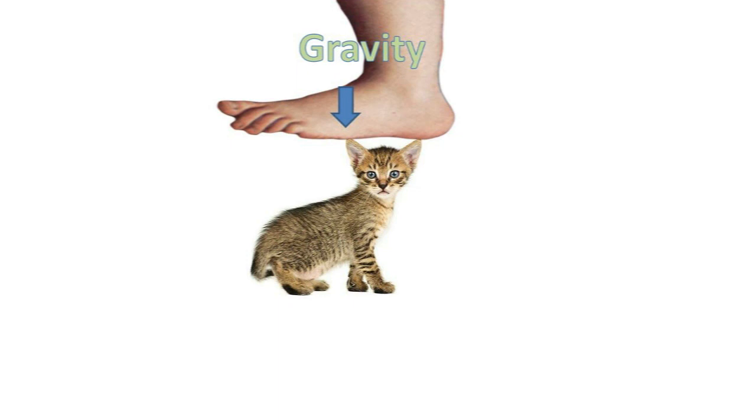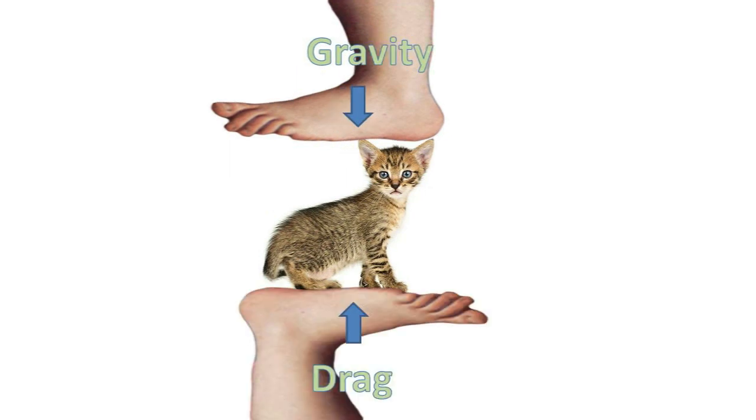So that would happen unless something called drag happens. So drag is a force that slows you down. Drag or air resistance acts in the opposite direction. And the amount of drag you get is proportional to your velocity or your velocity squared. So the faster you're falling, the bigger this thing starts pushing back up against you. So it slows you down.